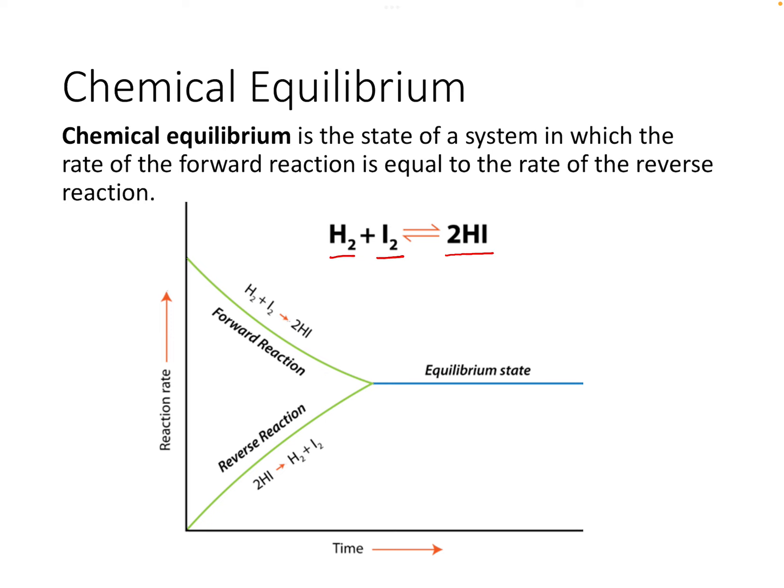The reverse reaction can also happen. Notice we have double arrows here — an arrow for the forward reaction and an arrow for the reverse reaction. So hydroiodic acid can actually decompose into hydrogen and iodine. Chemical equilibrium is where the rate of that forward reaction is equal to the rate of the reverse reaction.